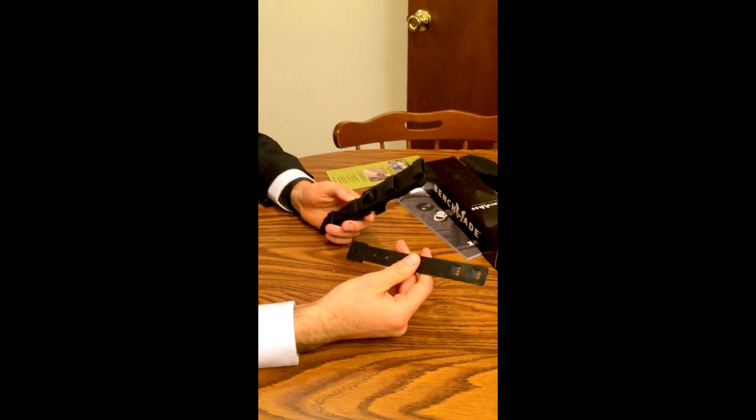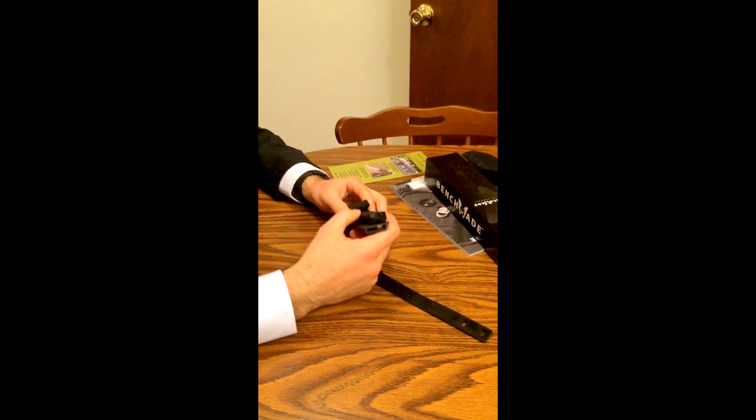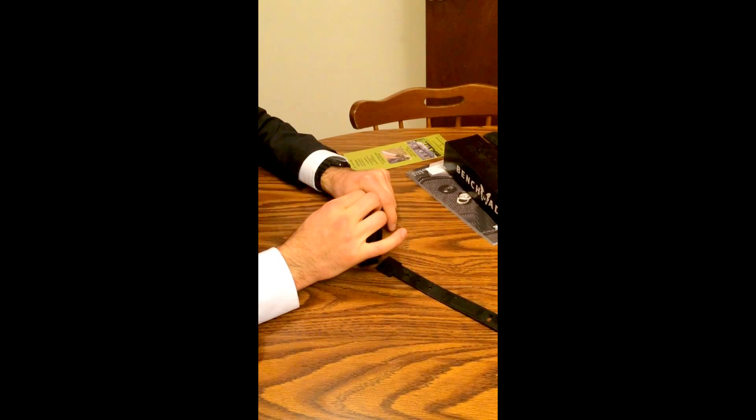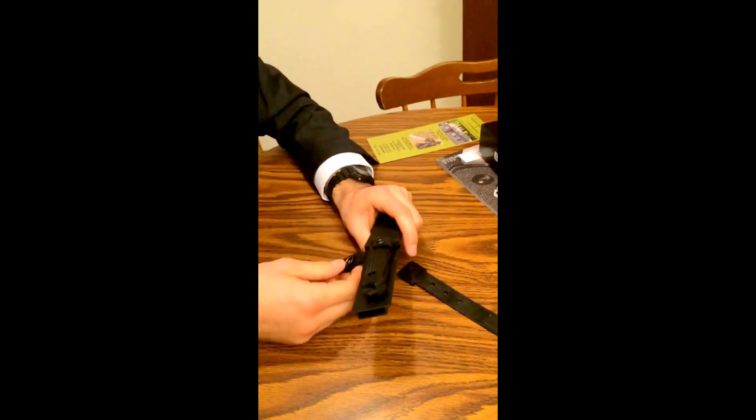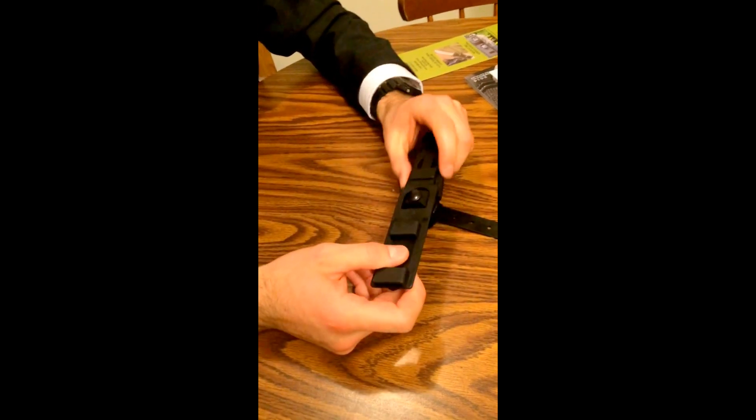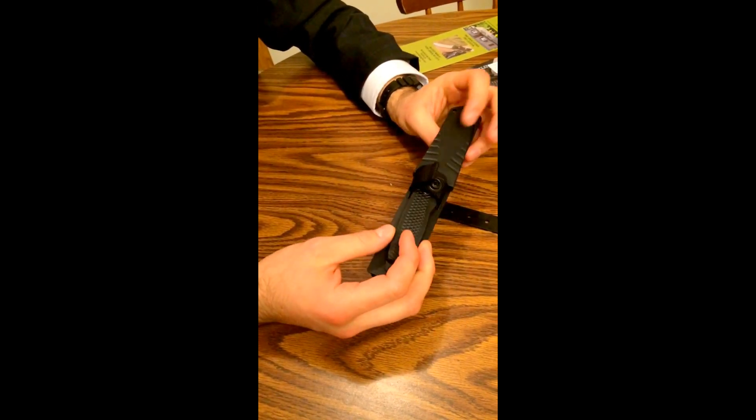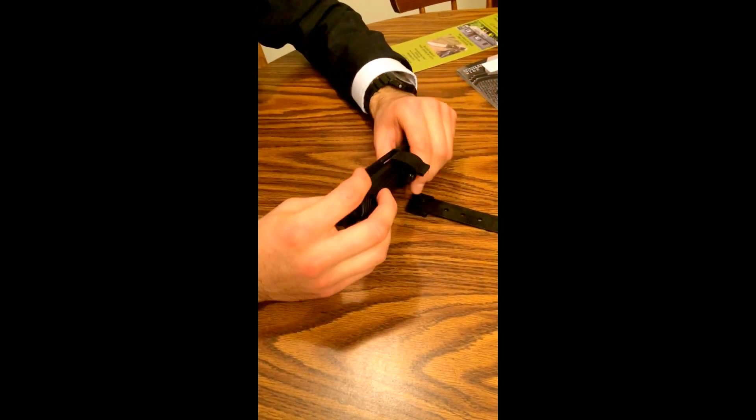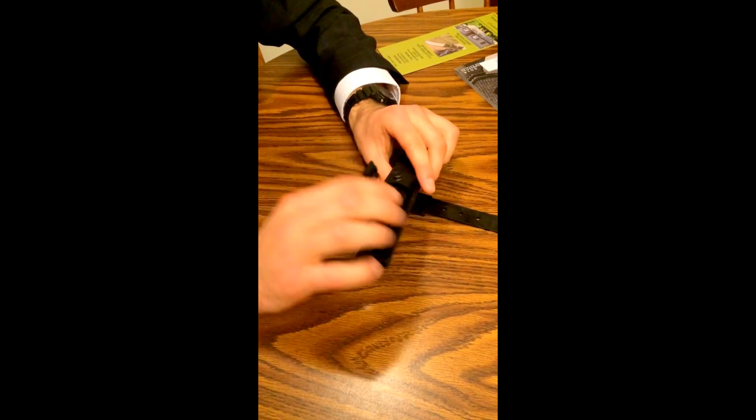This is for putting on your belt. You've got the mil-spec snap here on this MALICE clip, which you can take off. You can actually take this part off the sheath as well to have it plain, which is cool, and you can still have this little snap on there.